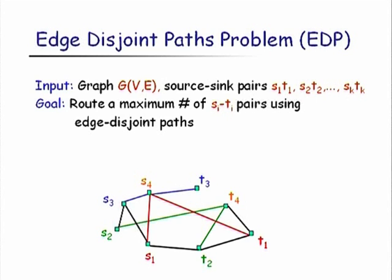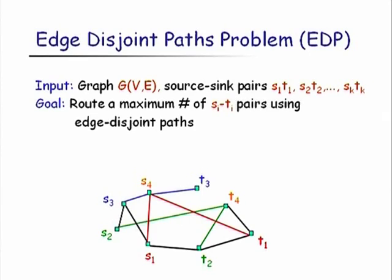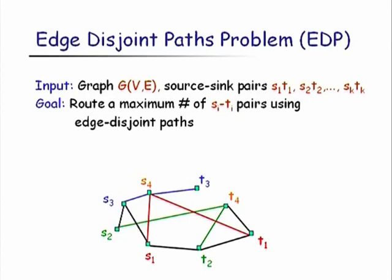When I say routing a pair, what it means is if you route a pair SITI, you assign a path in the graph to SITI — you connect SITI along this path. Edge-disjoint means that the routing of any two pairs SITI and SJTJ do not share any edges. In this graph I'm routing S1T1 along the red path, S2T2 along the green path, and S3T3 along the blue path. Once routed, there is no way to assign a path to S4T4 without violating the edge-disjoint property. This is an extremely well-studied problem.